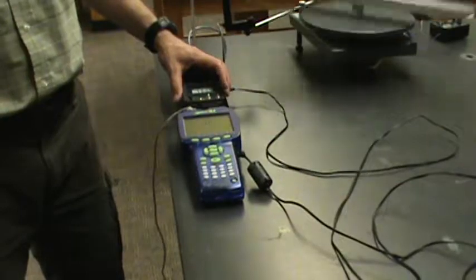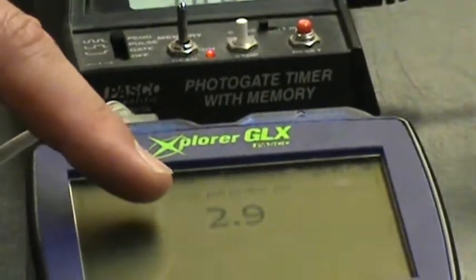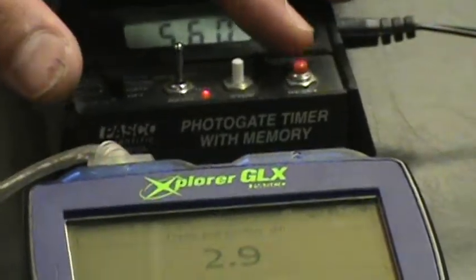Okay. 0.5609 and 2.9 is the fifth data point.